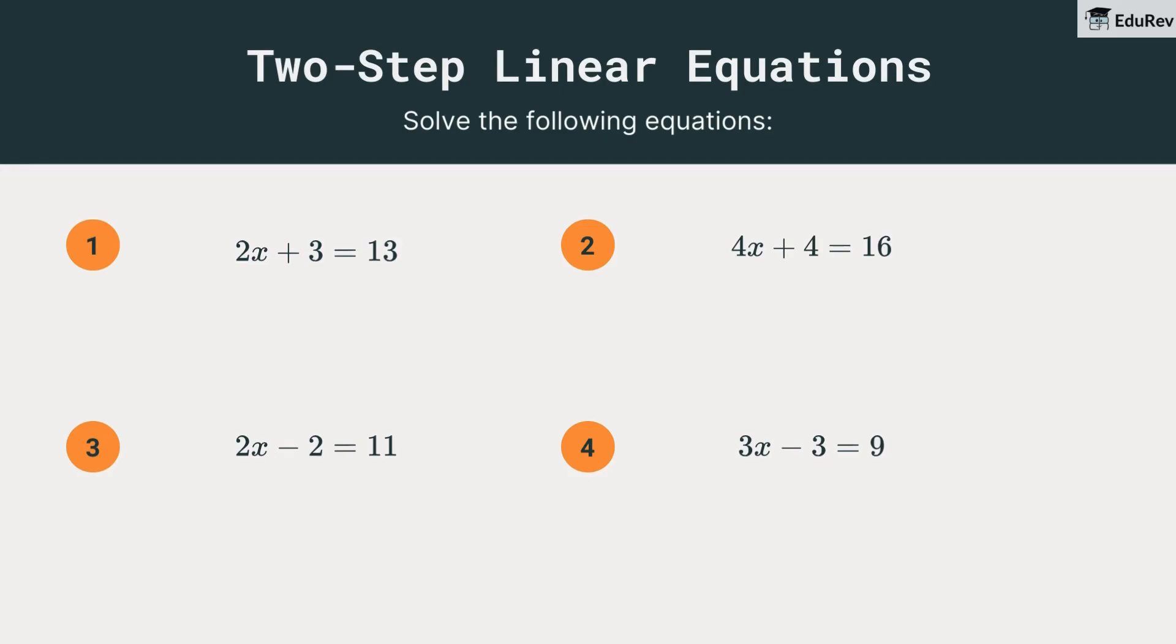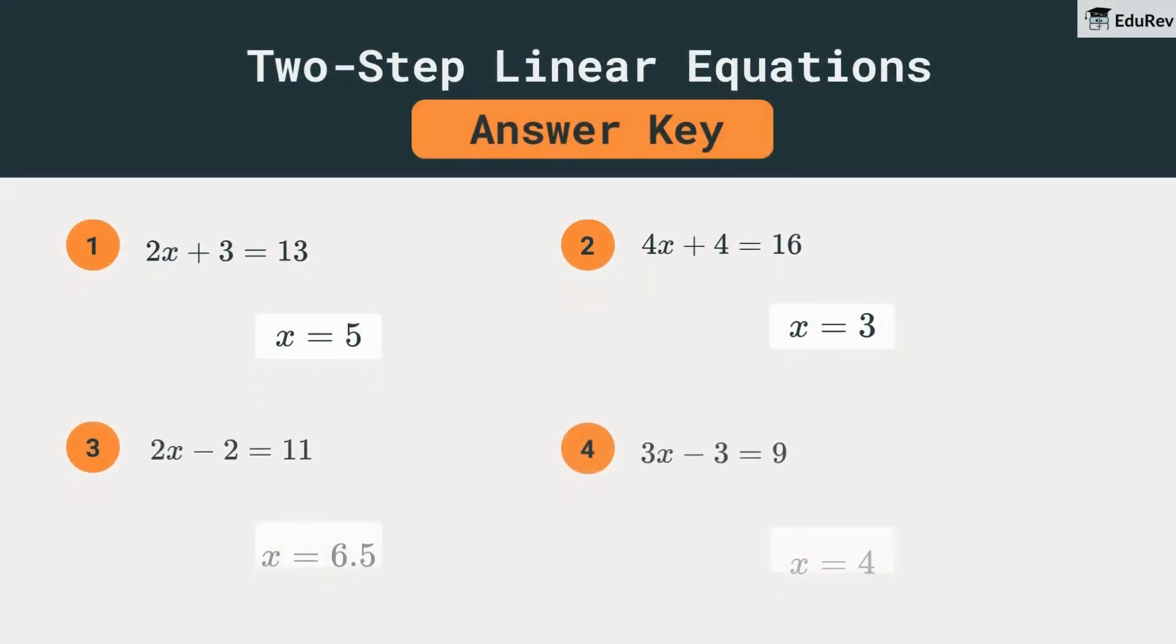Let's check our detective work. For 2x plus 3 is equal to 13, x is 5. And for 4x plus 4 is equal to 16, x turns out to be 3. We've got a few more solved here, like 3x minus 3 is equal to 9, which means x is 4. Great job solving these!